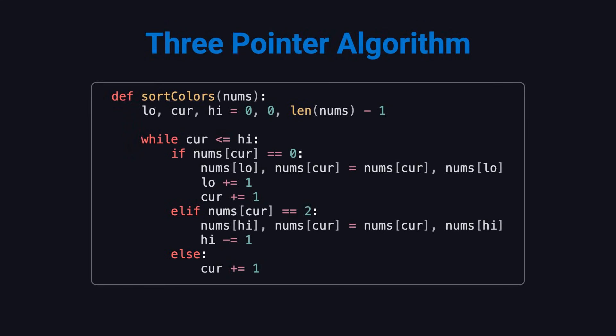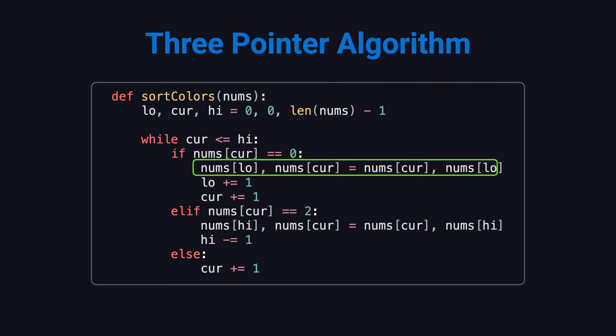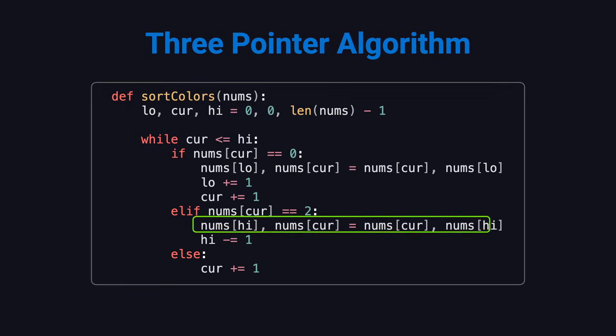Now let's talk about the optimal approach: the three-pointer algorithm. We use three pointers called low, current, and high. Low marks the right boundary of the 0 region. High marks the left boundary of the 2 region. Current is used to scan the array. At the start, low and current point to the beginning of the array, and high points to the end. As current moves through the array: if it sees a 0, we swap it with the element at low, then move both low and current forward. If it sees a 2, we swap it with the element at high, move high backward, but keep current where it is, because the swapped-in value hasn't been checked yet. If it sees a 1, we simply move current forward.